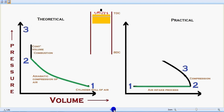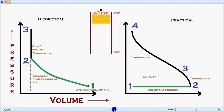In the third stage, constant volume combustion happens from 2 to 3 in the theoretical concept, with the piston at top dead center. In the practical concept, the graph moves from 3 to 4. In the theoretical concept this is a constant volume combustion — the line goes directly along the volume axis, keeping volume constant — which is why it is called an isometric process. In the practical concept, however, it is not a constant volume process, as you can see from the curve from 3 to 4.